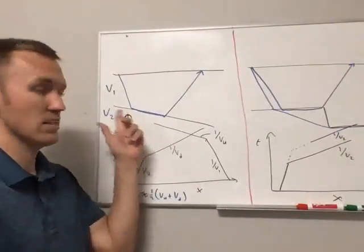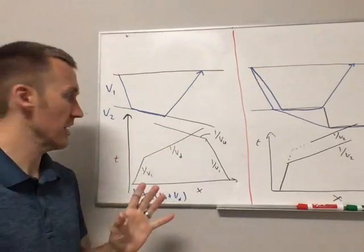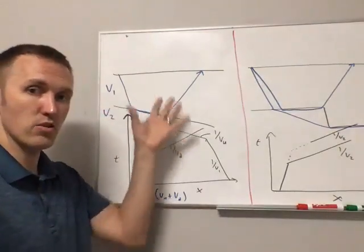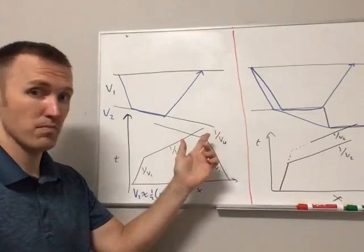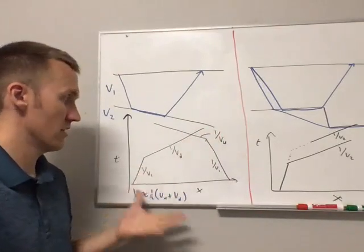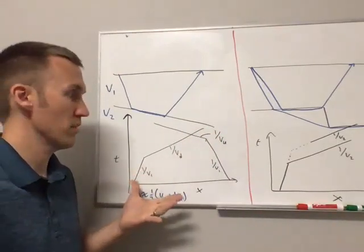In one case, you have a dipping refractor layer. The top plot is basically our two-layer problem, but with a dipping refractor layer or boundary. And then the time distance plot is on the lower part of the graph.